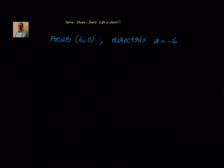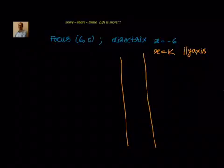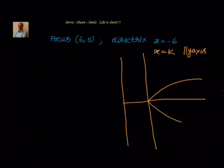Let's look at this example. We have been given the focus and the directrix and we have to find out the equation of the parabola. Focus is (6, 0). Let's draw a rough diagram of how this parabola will look. Focus is (6, 0), directrix is x = -6. Since x = k is a line parallel to the y-axis, the directrix is to the left, the origin is in the middle, and this is the axis of the parabola, so our curve opens to the right.